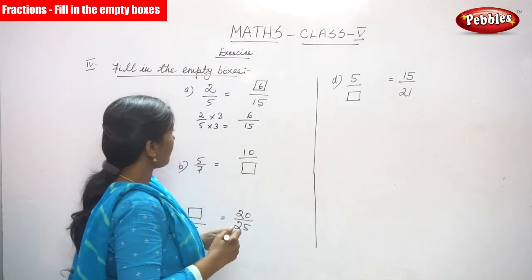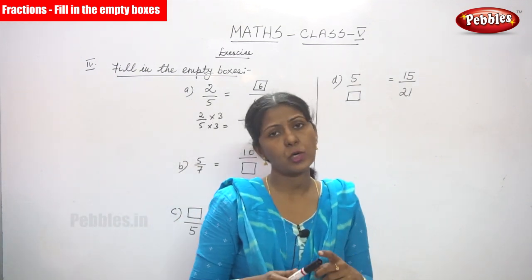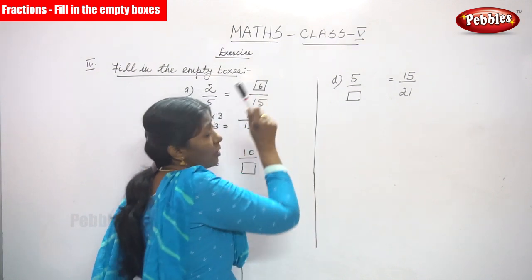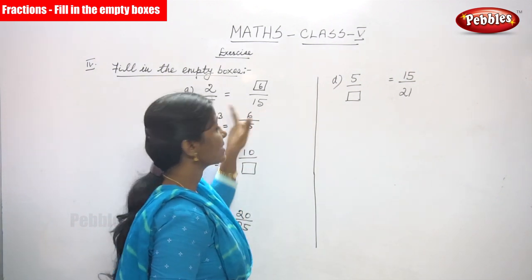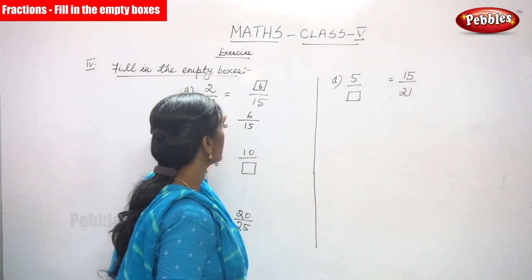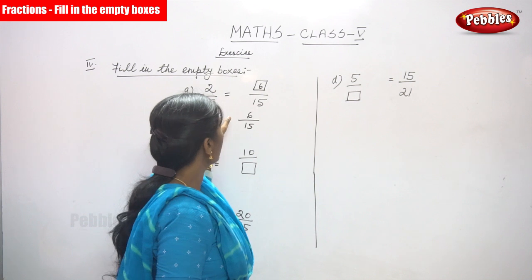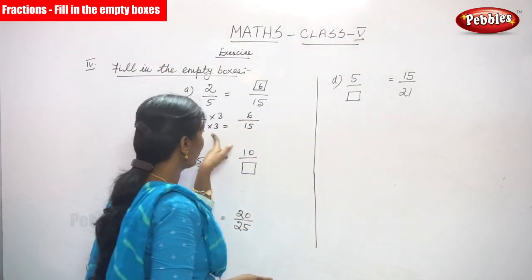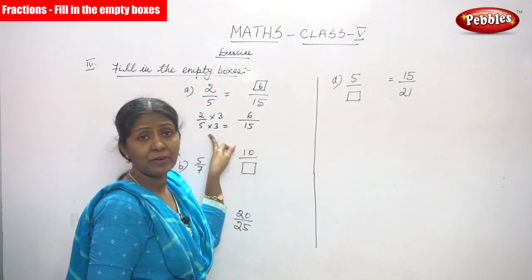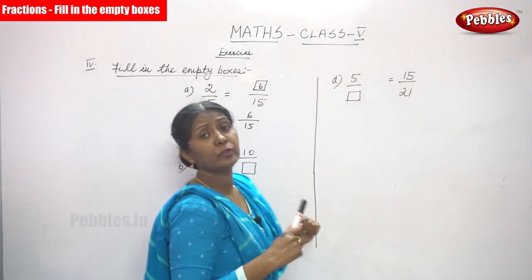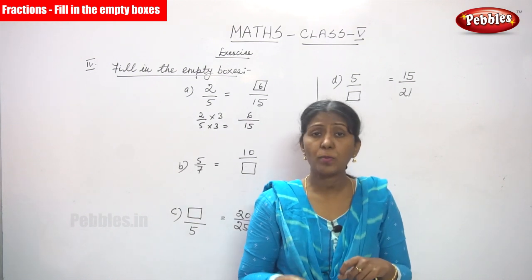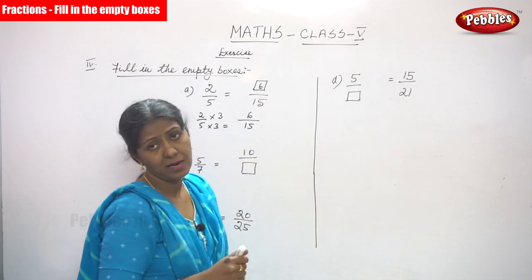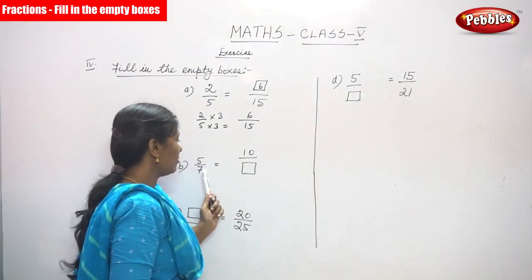The answer is 6. To repeat: 2 by 5 equals box by 15. Both denominators are given — 5 and 15. Find the multiple: 5 into 3 gives 15. If the denominator is multiplied by 3, the numerator is also multiplied by 3. So 2 multiplied by 3 gives 6. Write 6 in the box. Next question: 5 by 7 is equal to 10 divided by what?